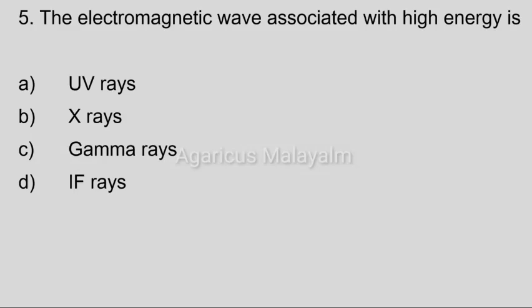Fifth question: The electromagnetic wave associated with high energy is? Answer options: Option A, ultraviolet rays. Option B, x-rays. Option C, gamma rays. Option D, infrared rays. Correct answer: Option C, gamma rays.